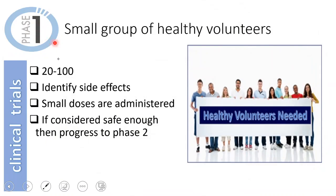The first phase of clinical trials is done on a small group of healthy volunteers — they should be volunteers and they have to be paid. The group should not exceed 100 people, ranging from 20 to 100. The main purpose is to identify the side effects of the possible treatment and to find a dose interval that should be administered, using small doses to avoid possible side effects. If it is considered safe enough, it will progress to phase two, though many possible treatments will fail at this stage.